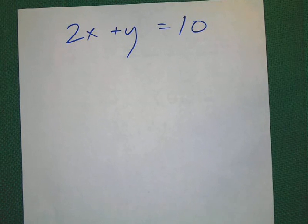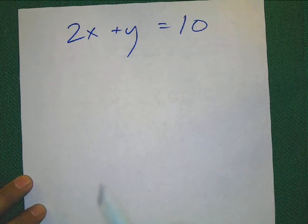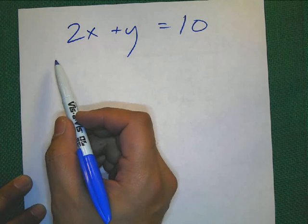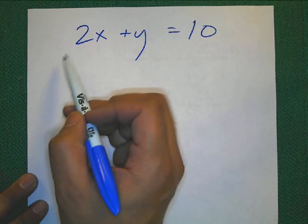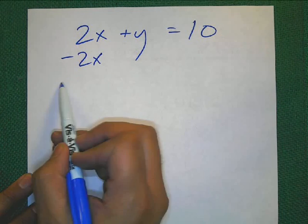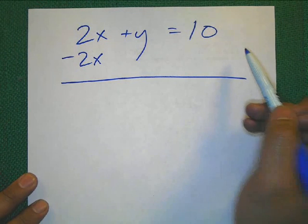Alright. So, here we go. 2x plus y equals 10. To get y by itself, if that's a positive 2x, what should I do? If you said subtract 2x, you are correct.